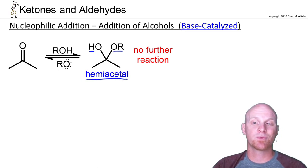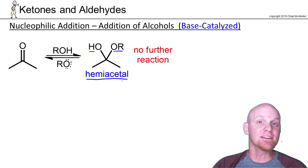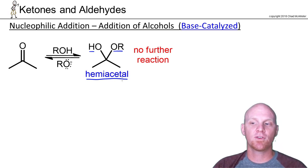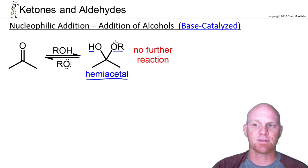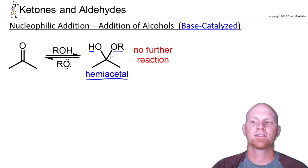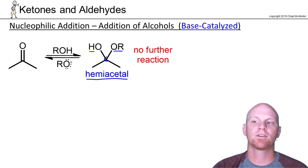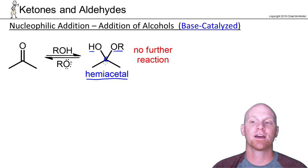Technically, hemiacetals are when you add an alcohol across an aldehyde, and some people say hemiketal for when you add across a ketone, but modern convention just calls them all hemiacetals. One thing to recognize in a hemiacetal: you've got a carbon with single bonds to two different oxygens — one's an O with a carbon chain, and one's an OH. That's how you recognize a hemiacetal.